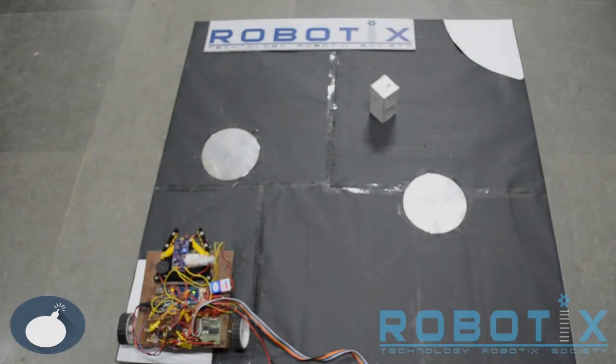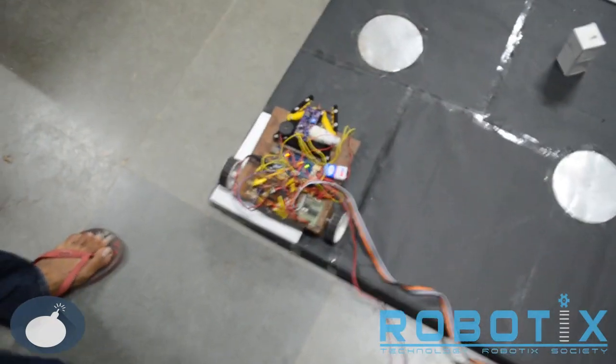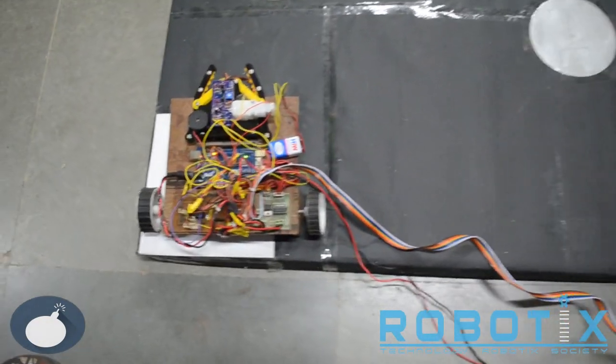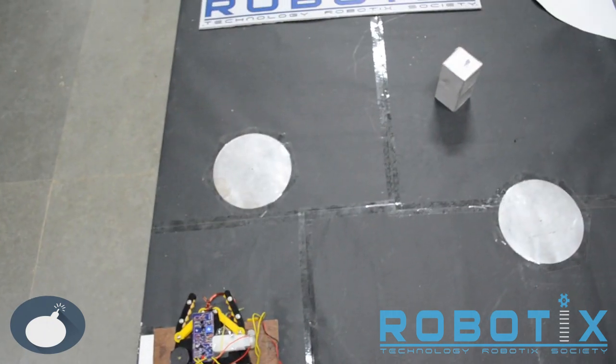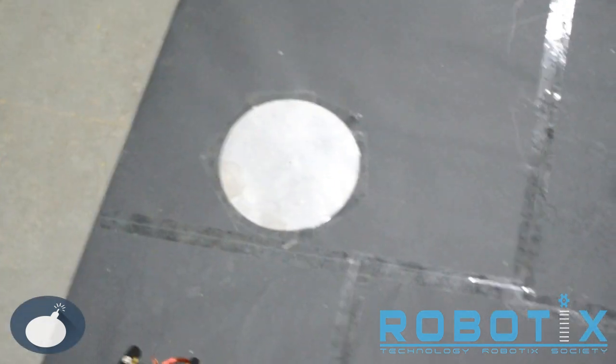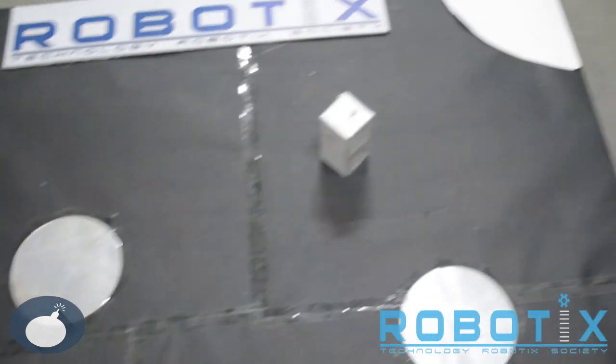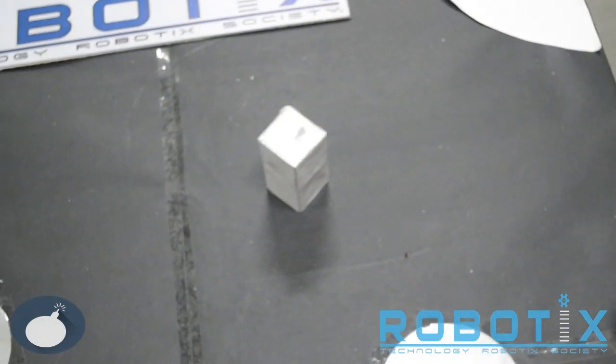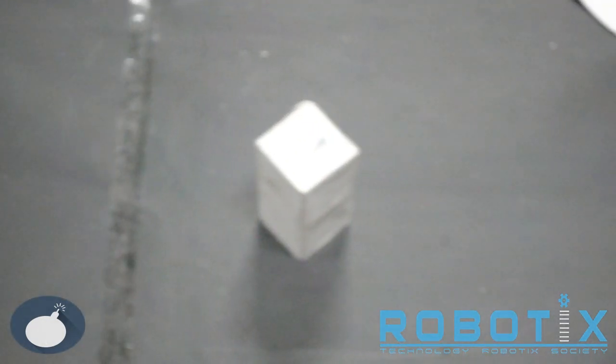We have depicted the arena for the event. The robot should start from this point, which is the start zone, and it has to traverse the arena while avoiding those metal mines, as shown by the circular plates in the video. What it has to do is pick up the victim, which has been depicted by the block there.